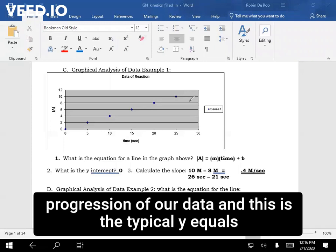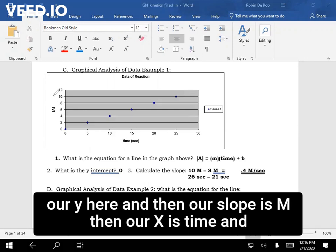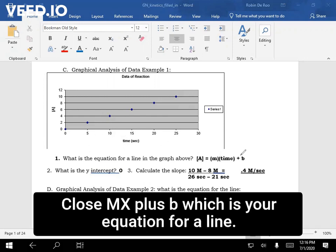And this is the typical y equals mx plus b. So if our y is concentration of A, that's from our y here. And then our slope is m, and then our x is time, and then the intercept is b. So we're going to use the y equals mx plus b, which is your equation for a line.